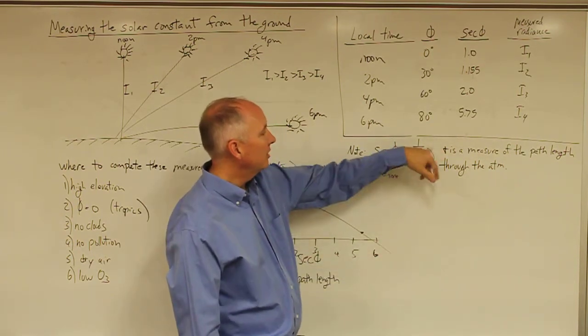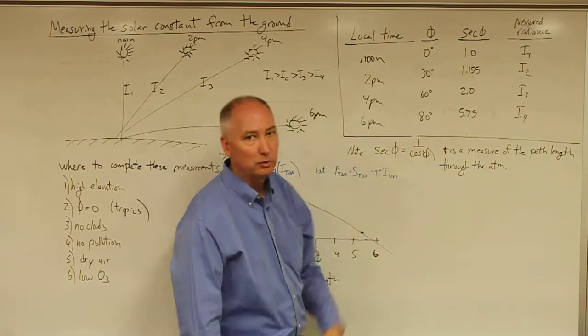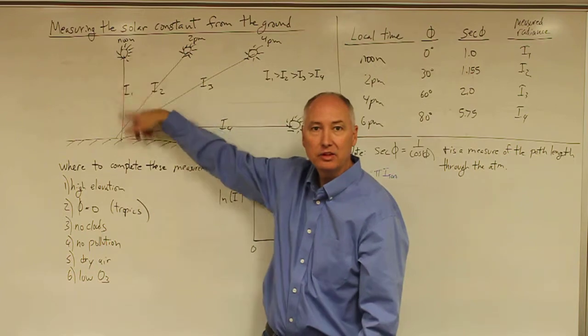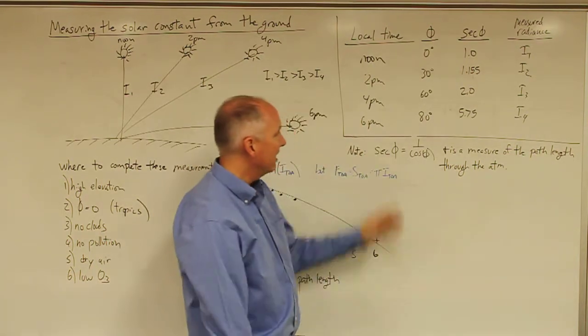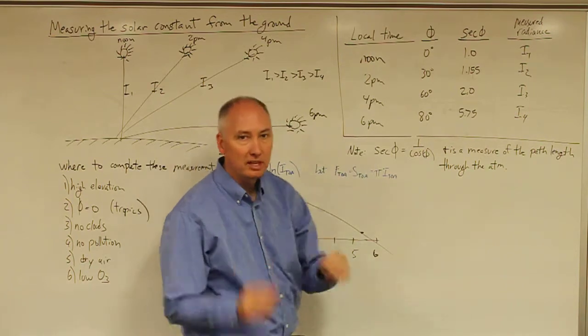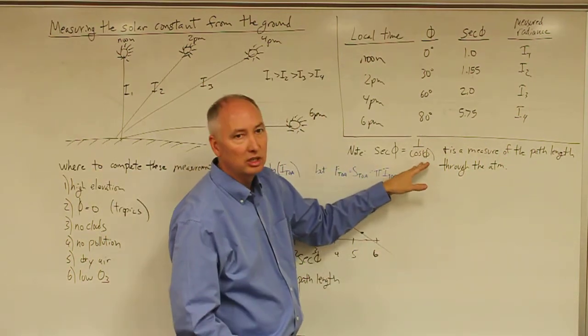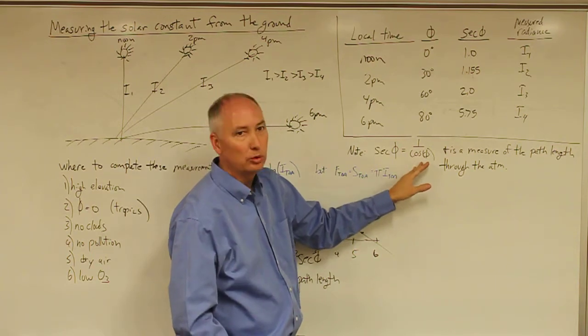And so when you have a zenith angle of zero, the cosine of zero is one and you'll end up with the shortest possible path length in the Earth's atmosphere. And as the zenith angle gets larger, the sunlight has to pass through a longer path length and this function actually represents that correctly.